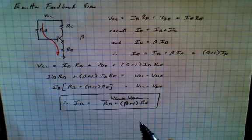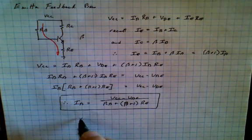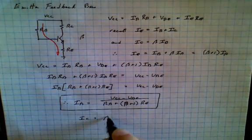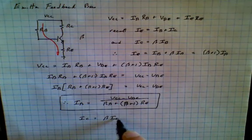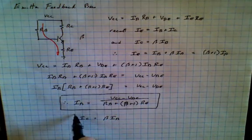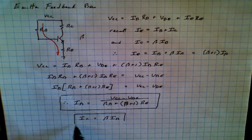Now we also know where Ic is. And Ic is simply equal to beta Ib. So there's the second defining equation.